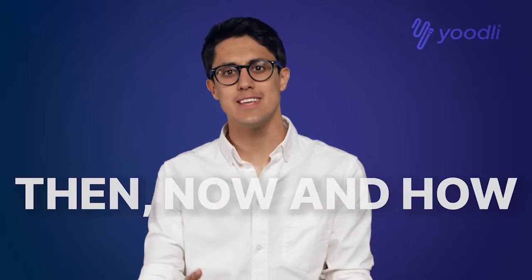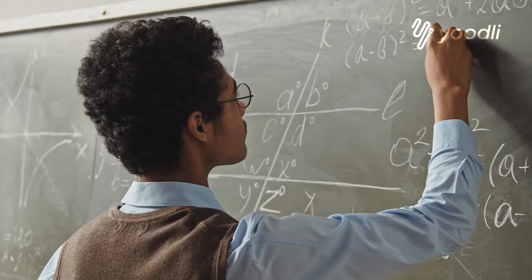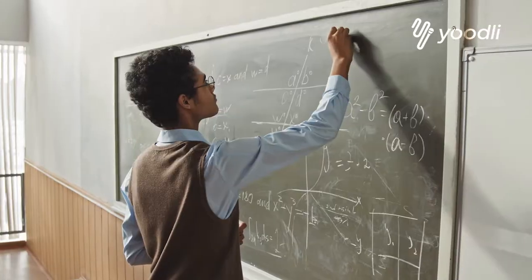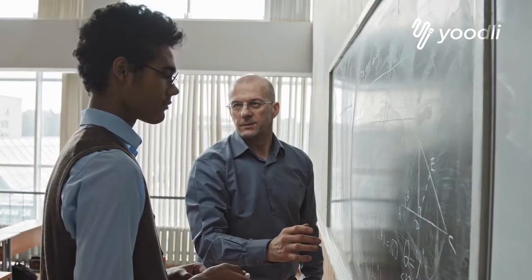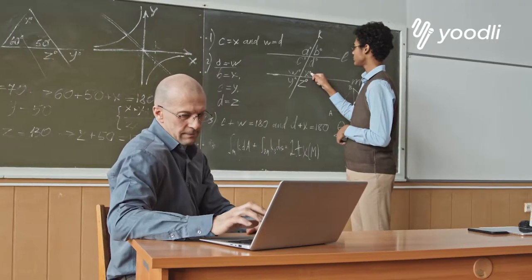Another effective technique is called then, now, and how. Very often we are telling people something we struggled with in the past, how we've overcome it, and where we're going with it. That framework basically means talk about where you were then, talk about where you are now, and then give the story of how you got there.